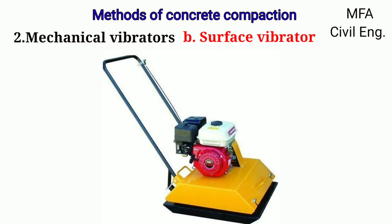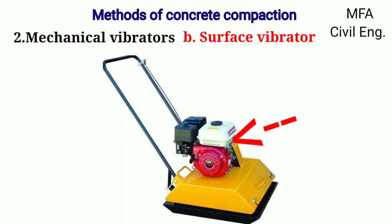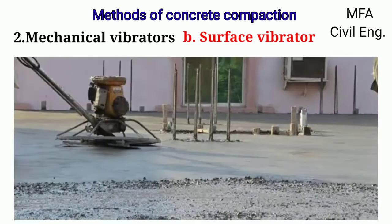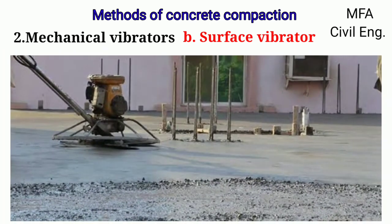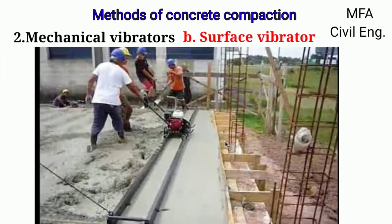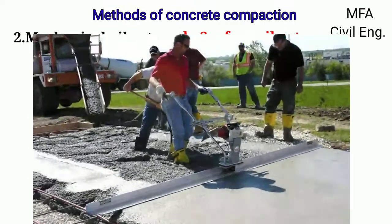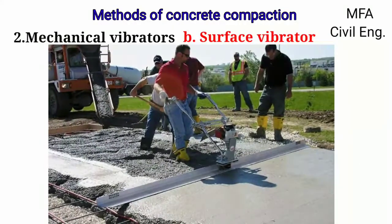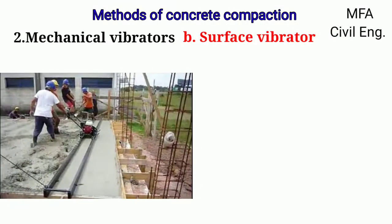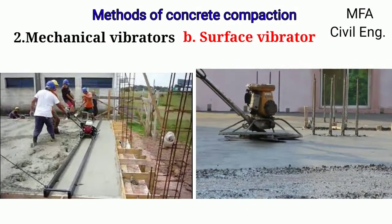The surface vibrator is also known as a screed board vibrator. A small vibrator placed on the screed board gives an effective method of compacting and leveling thin concrete members such as floor slabs, roof slabs, and road surfaces. Mostly floor and roof slabs are so thin that a needle or any other vibrator cannot be used easily, and in such cases a surface vibrator can be effectively used.